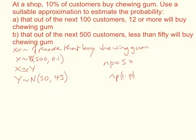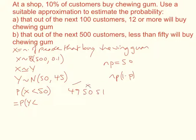We need to work out the probability that fewer than 50 customers will buy chewing gum, so the probability that X is less than 50. Converting to Y and applying the continuity correction: we want 49 but not 50 or 51, so this becomes the probability that Y is less than 49.5.